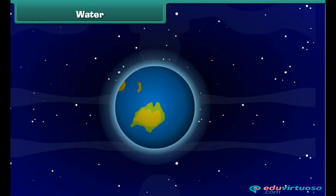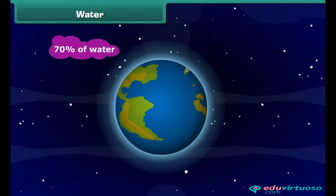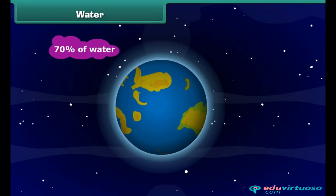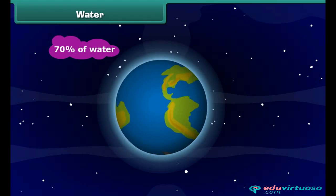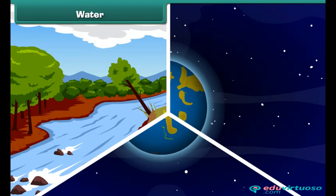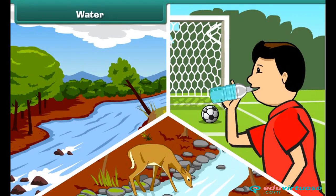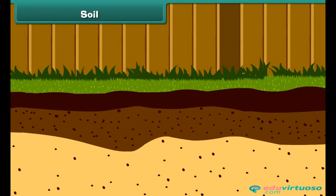About 70 percent of Earth's surface is covered by water. Water is also an important natural resource. It is necessary for the survival of plants, animals, and human beings.